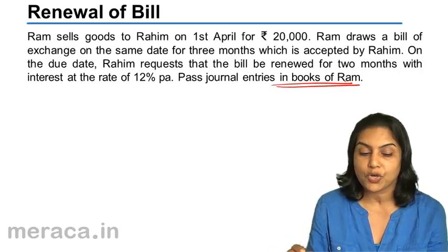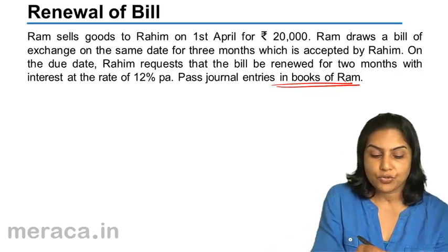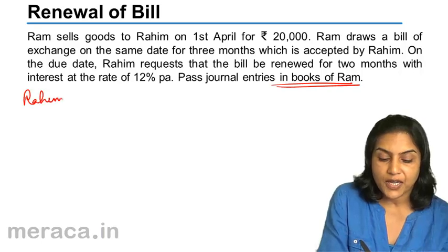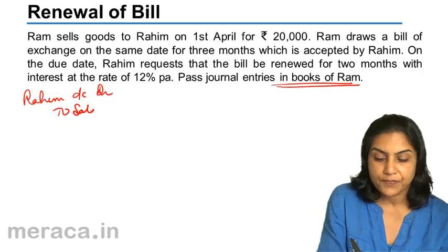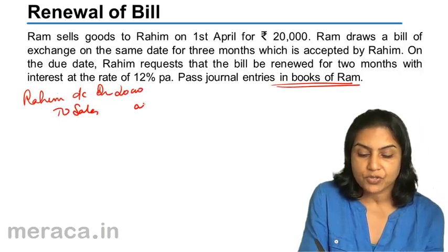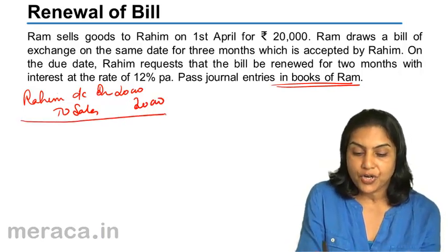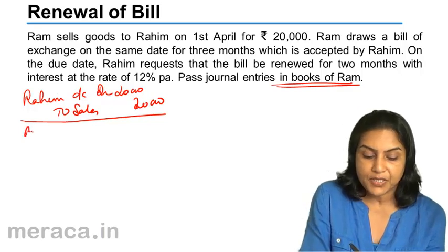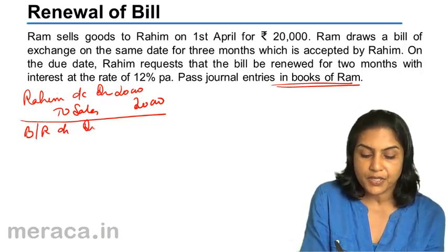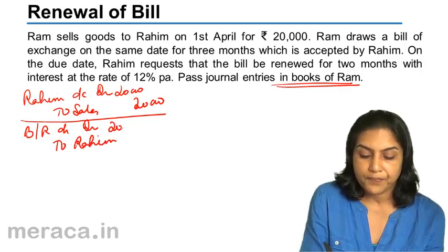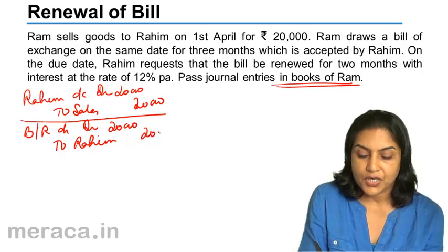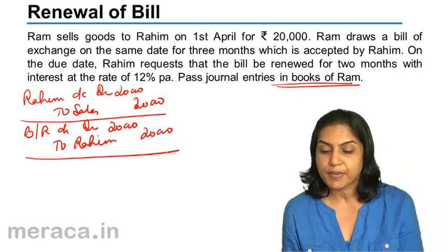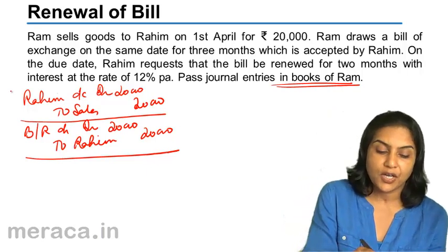Pass entries in the books of Ram. Ram has sold goods, so the first entry for the sale is: Rahim account debit to Sales, amount 20,000. Next, Ram has drawn the bill and Rahim has accepted it. Therefore, it is bills receivable in the books of Ram: bill receivable account debit to Rahim. So Rahim's account is settled in this manner. This was on 1st April.